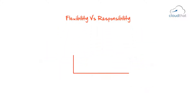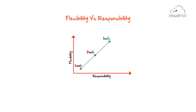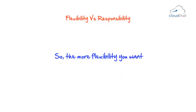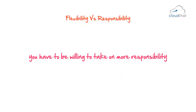As you might have already guessed, Platform as a Service has lower responsibility, but with it comes less flexibility. And though Infrastructure as a Service has greater flexibility, it has greater responsibility. So, the more flexibility you want, the more responsibility you have to be willing to take on.